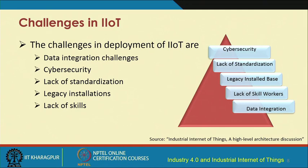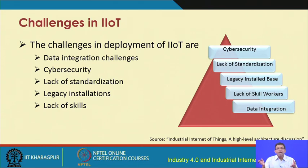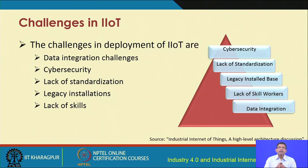There are different challenges in the deployment of IIoT. There are data integration challenges — we are talking about a large number of machines, each with their own heterogeneity, pouring in different types of heterogeneous data. Integration of varied types of data coming in high volumes with large variety is a huge challenge in the IIoT context, and this was not present in traditional automation. Cybersecurity is also very important because now we are talking about a very connected world.